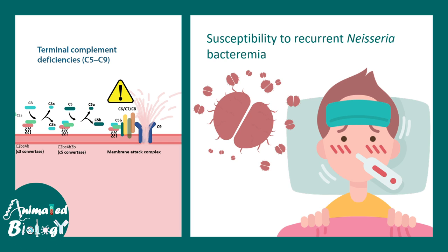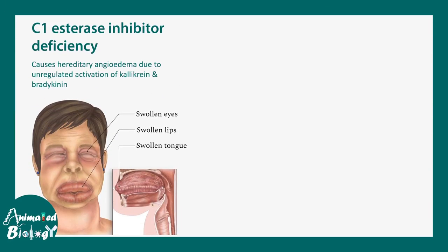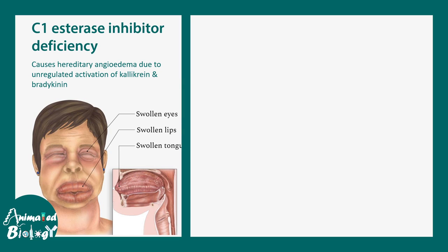C1 esterase inhibitor deficiency is another type of complement deficiency which causes hereditary angioedema. It leads to upregulation of kallikrein and bradykinin, causing edema in different regions, especially in the facial portions.